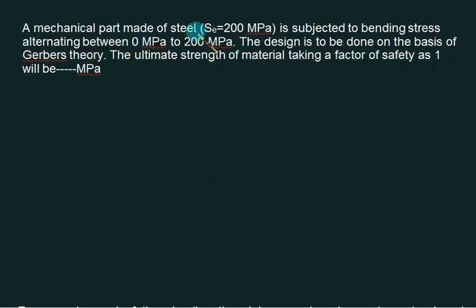We are given mechanical part of steel, SE equal to 200, subjected to bending stress from 0 to 200. Minimum—this one is maximum. The design is to be based on Gerber theory. First of all, Gerber theory. For Gerber theory, you have to join SE with SUT by a parabola. This one is mean value. This one is amplitude value.